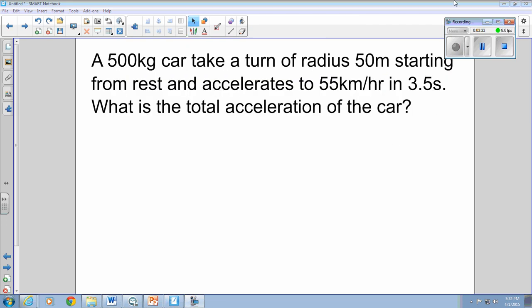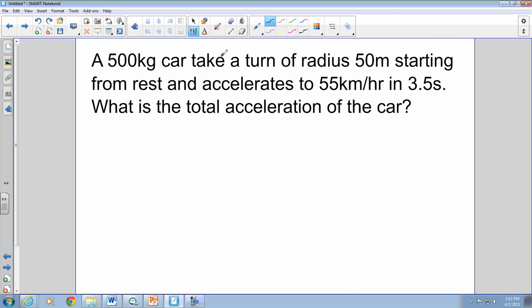Okay, so here's a quick problem about non-uniform circular motion. You have a car that's going to take a turn with a radius of 50 meters starting from rest, so we know our initial velocity is equal to 0.